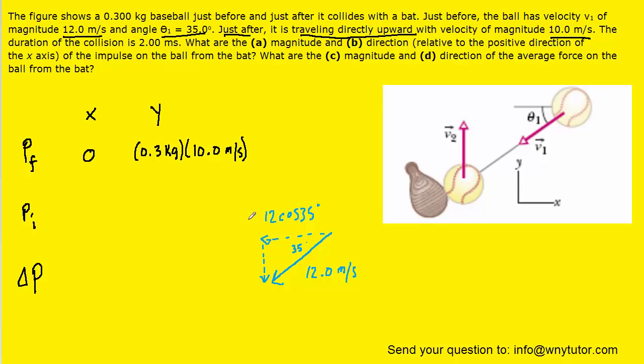And then the y component is pointing straight down and it's opposite from the 35 degree angle. So we know that we can label that negative 12 times the sine of 35. So those would be the initial x and y velocities. And we're going to plug them in.